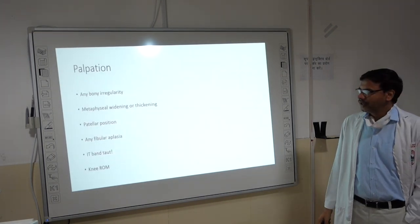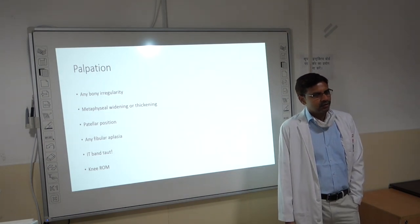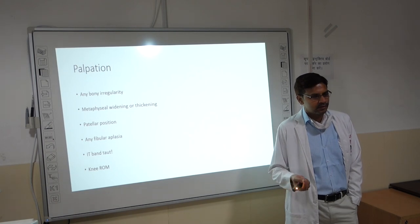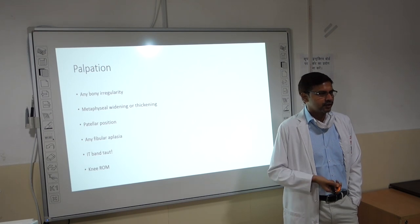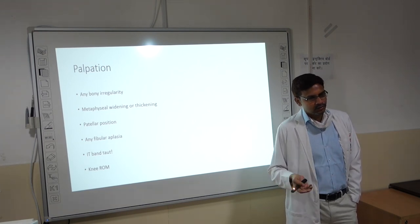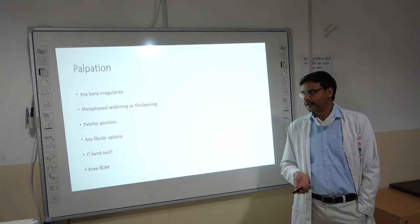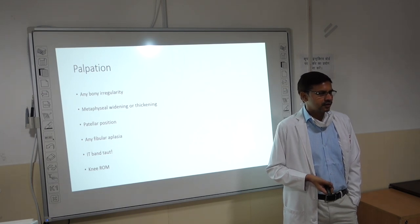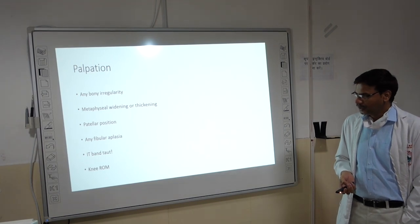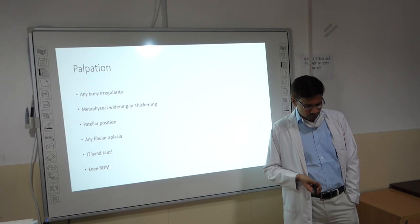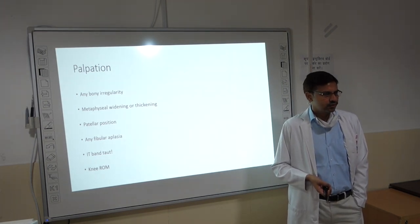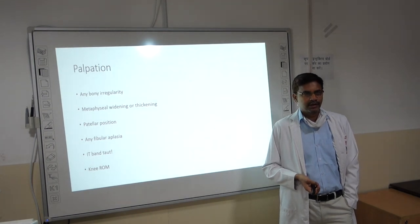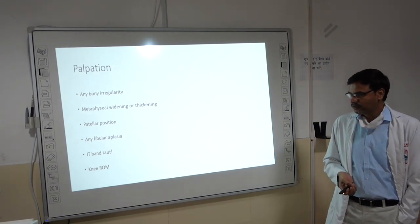On palpation, bony irregularities may be found — for example, in enchondromatosis where osteochondromas are tethering the physis and causing growth arrest or deformity. In rickets there will be widening of the physeal-metaphyseal junction on palpation. Check patellar position — in severe genu valgum the patella tends to subluxate or dislocate. Look for fibular aplasia, as genu valgum is common in fibular hemimelia. Check for IT band tightness, which may cause genu valgum, and finally assess knee range of motion.